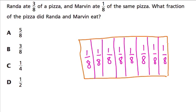So Rhonda, or Randa, ate three-eighths of the pizza, which means maybe these three-eighths right here were eaten by Rhonda. Right? So those are gone.